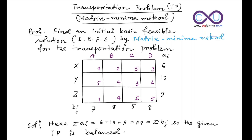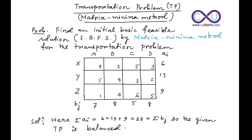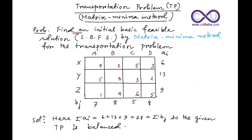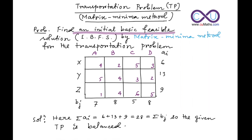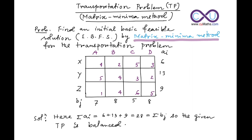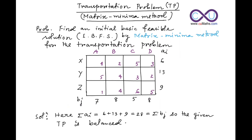Our topic is solving the transportation problem using the matrix minima method. Generally, here we find the initial basic feasible solution using the matrix minima method without testing optimality. Now let us see the question: find an initial basic feasible solution (IBFS) by the matrix minima method for the given transportation problem.